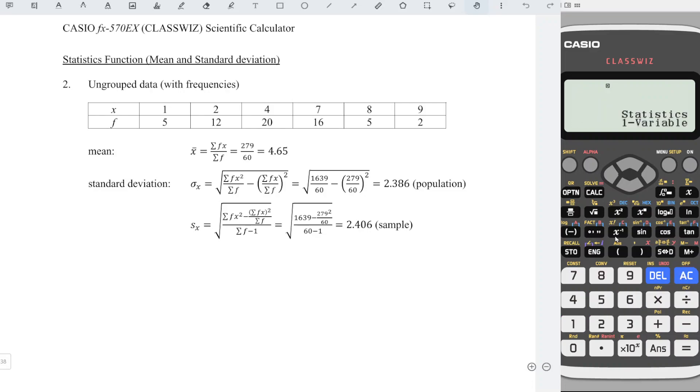Press AC. Press option. Choose two, one variable calculations.